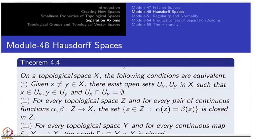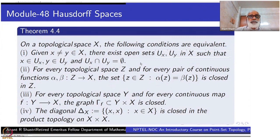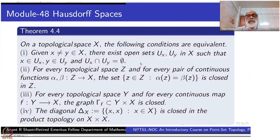Once again, similar to what we did for Fréchet spaces, but this time with only four equivalent conditions. I will make a statement on a topological space X. Condition one: given two distinct points X and Y, there exist open sets Ux and Uy in X such that X is in Ux, Y is in Uy, and Ux intersection Uy is empty. This is also stated as: every pair of distinct points can be separated by open sets.